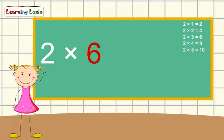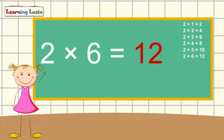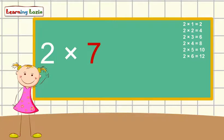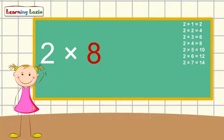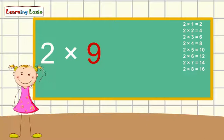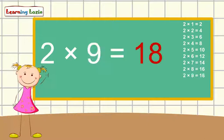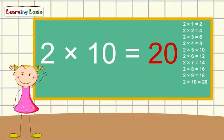Two times six is twelve, two times seven is fourteen, two times eight is sixteen, two times nine is eighteen, two times ten is twenty.